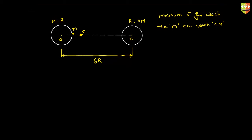Try this on your own. What will be the condition for minimum velocity? Is the minimum velocity the one for which the object reaches the other sphere with zero velocity — just barely reaching it? Is that the condition for minimum velocity?